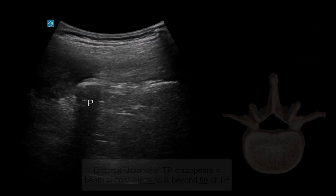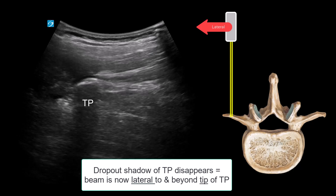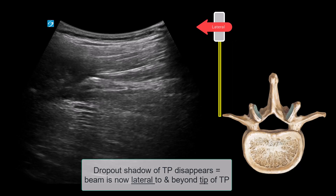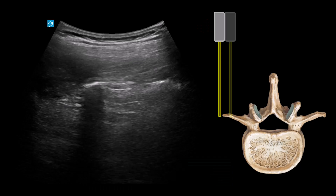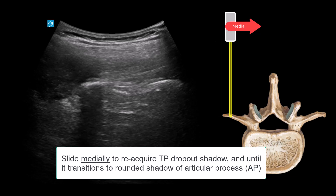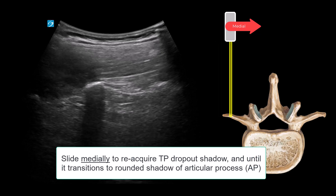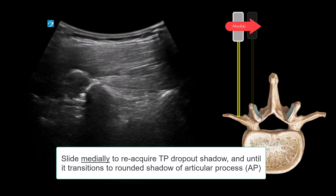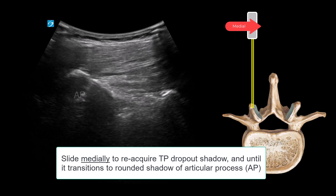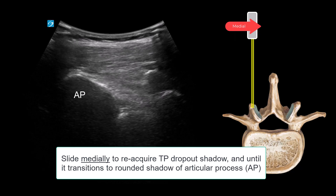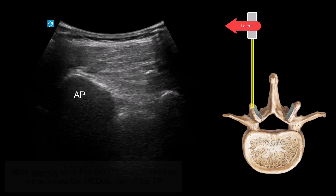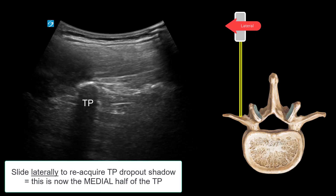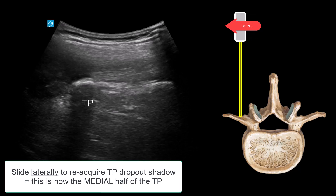This can be done as follows. From the parasagittal view of the transverse process, slide the probe laterally until the dropout shadow disappears. Slide the probe medially to reacquire the transverse process and continue until the transition to the articular process shadow is seen. Then slide the probe laterally again to image the medial half of the transverse process.